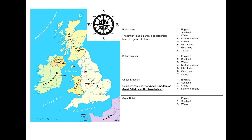The British Islands includes all the same islands except for Ireland, so this only includes England, Scotland, Wales, Northern Ireland, and then the Isle of Man, Guernsey and Jersey.